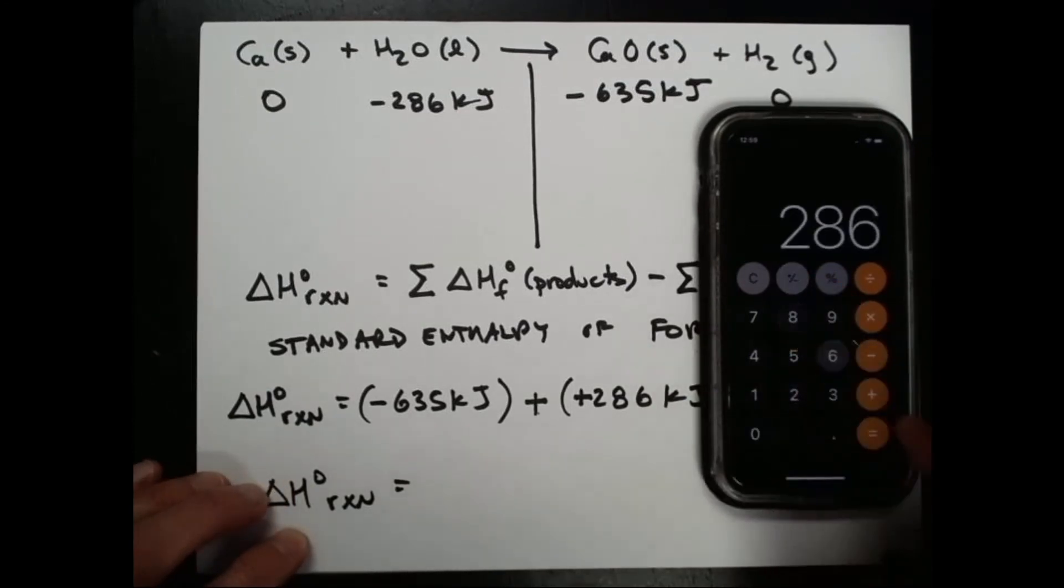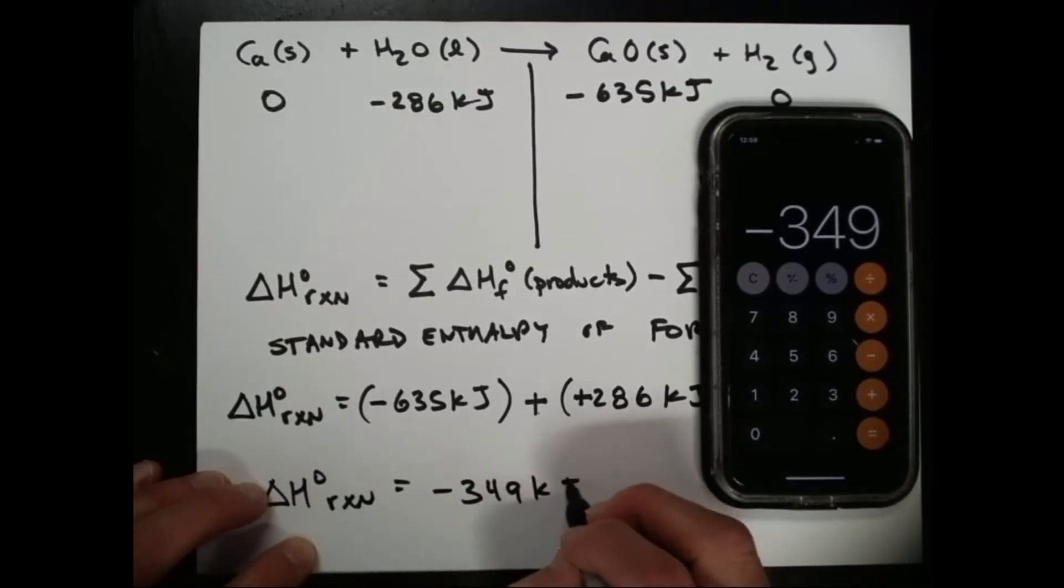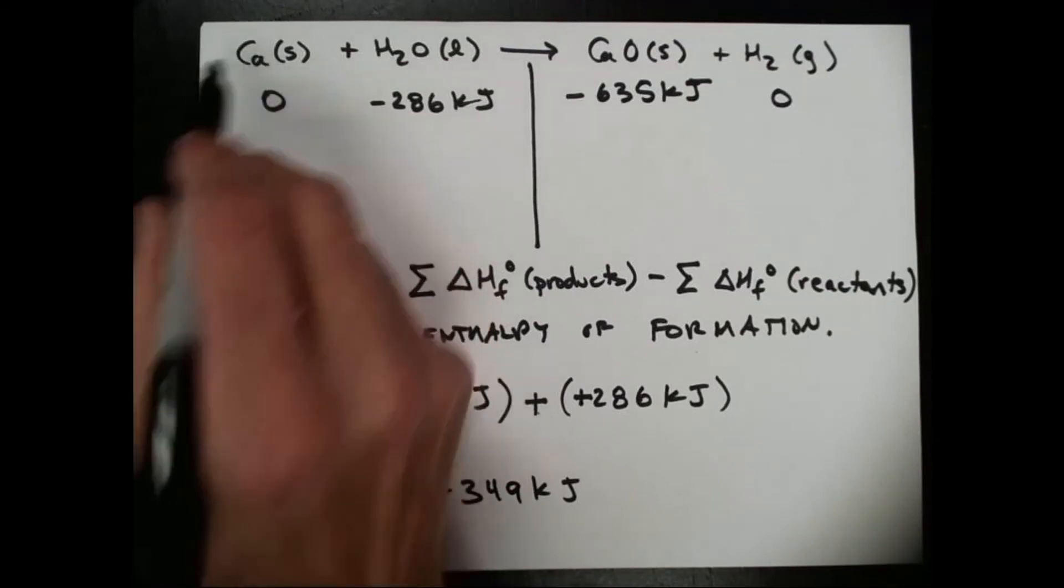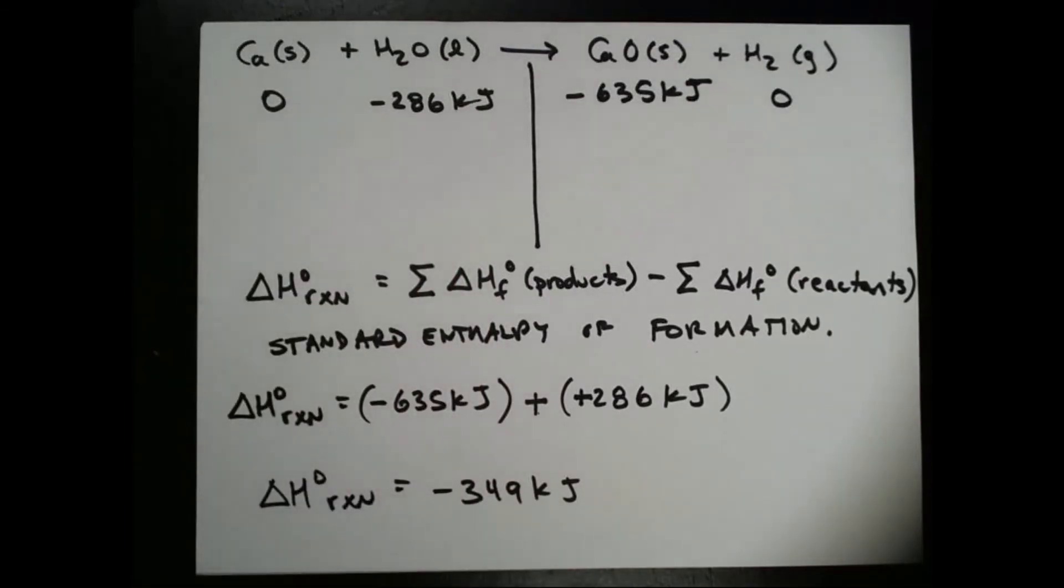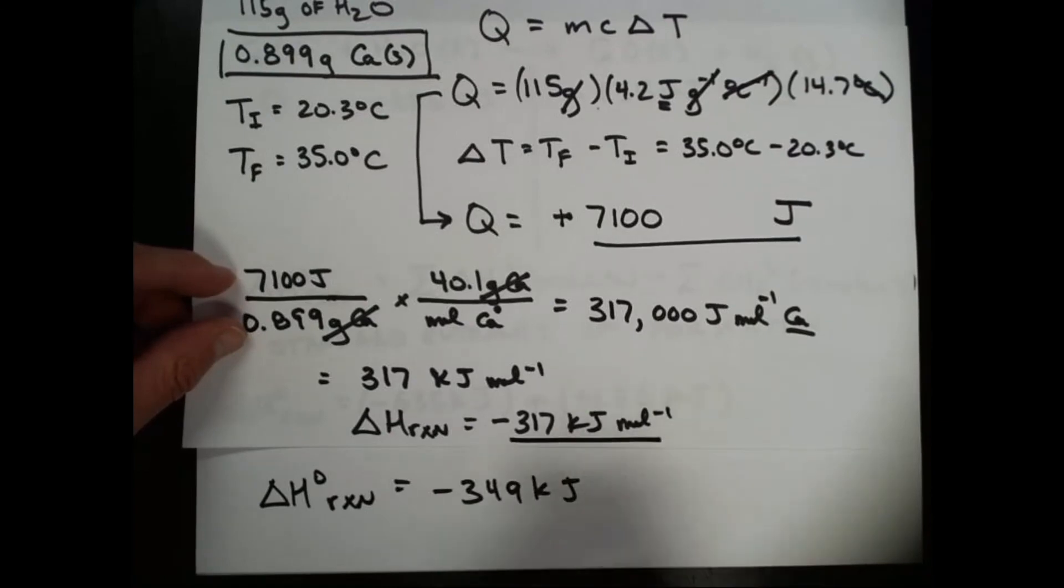635 plus 286, negative 349 kilojoules, looks like for every mole of calcium that reacts, and that's fairly close to what we found when we ran the reaction in the styrofoam cup.